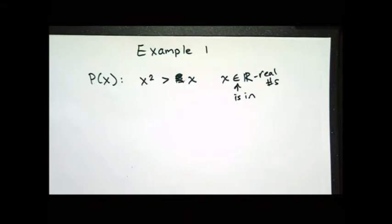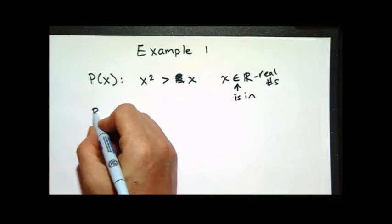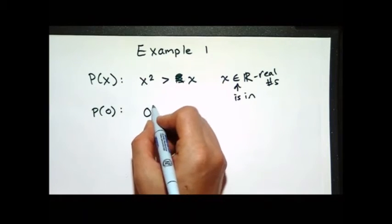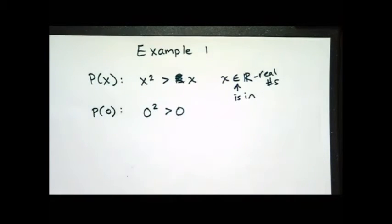So we want to know, is X squared greater than X true for all real numbers? Or is it true for any particular one? So P of 0 actually says, what I do is I take that 0 and I put it in for X. And then I have a statement that I can evaluate whether it's true or false.